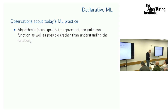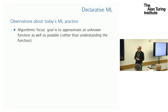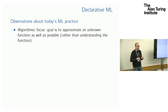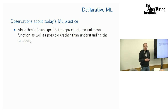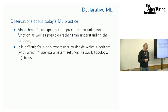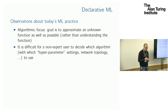I'll start with very general observations about machine learning. We have a very algorithmic focus. Our goal is usually to construct a function that approximates an unknown function, and what we want is to make good predictions about the unknown function. Another point is that it may be quite difficult to decide which algorithms to use, which parameter settings, which network topology. If you want good results, you probably should know what you're doing.